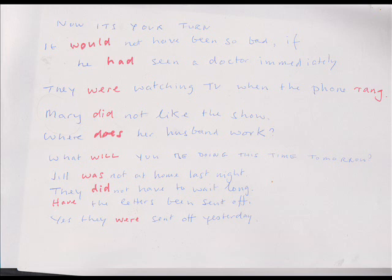Cosmo, what about the next one? 'They were watching TV when the phone rang.' — 'They were' is the past tense of 'be', combined with -ing: progressive. Past progressive, or past continuous. Correct. And of course 'rang' — rang is past simple. Good.